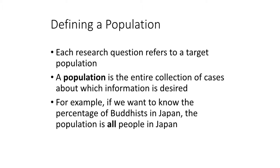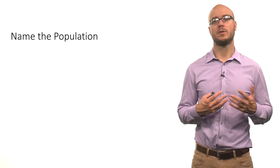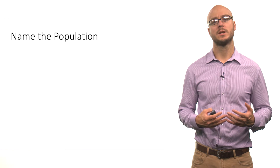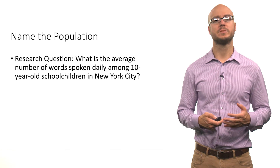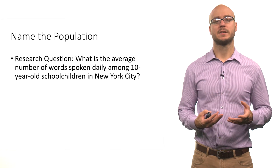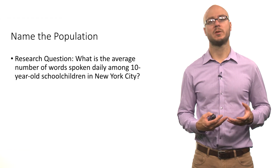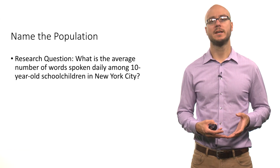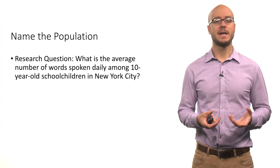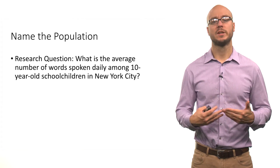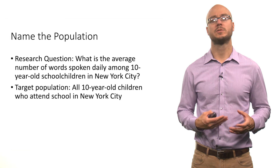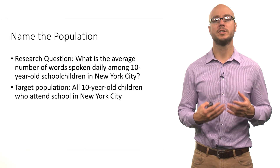For example, if you're talking about the percentage of Buddhists in Japan, the population implied is all people in Japan. Looking at our research questions: when we ask about the average number of words spoken daily among 10-year-old schoolchildren in New York City, the target population is all 10-year-old children who attend school in New York City.